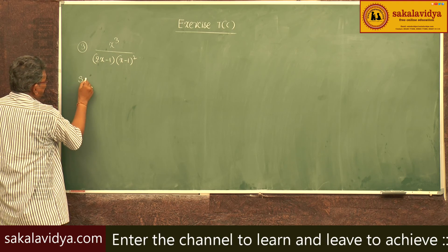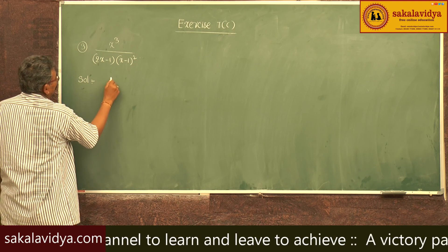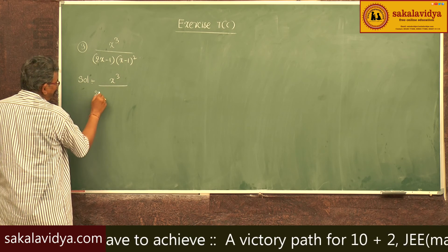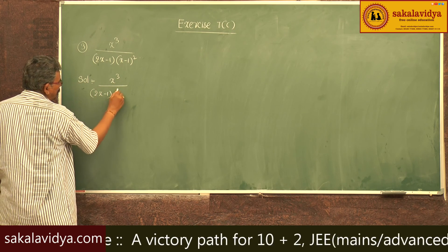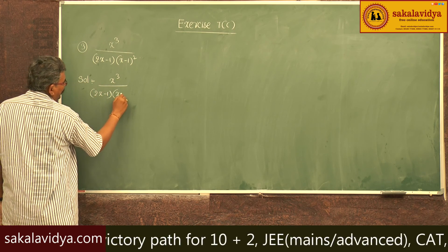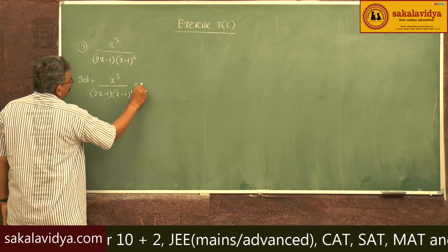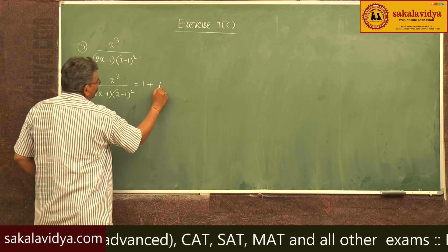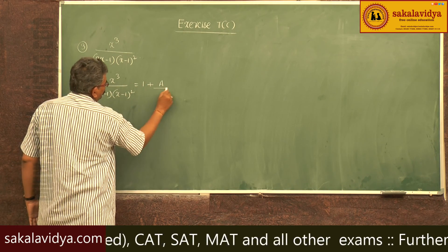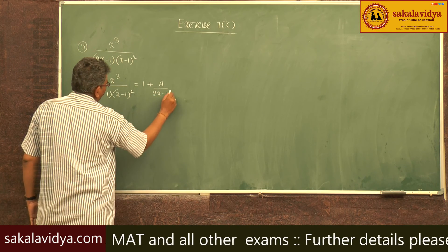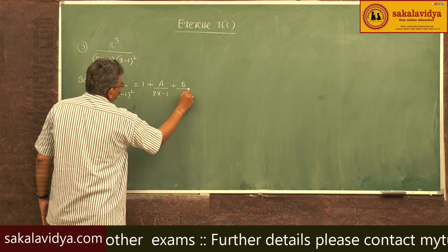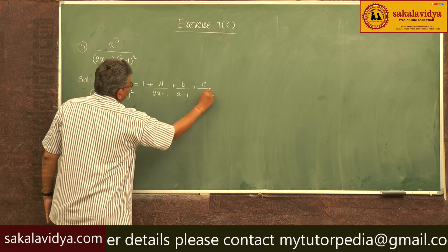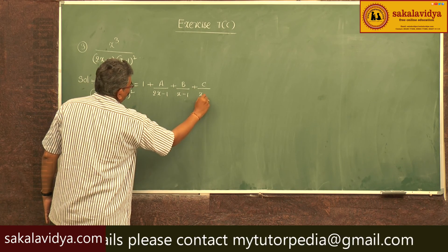So this we can write as: x cube by (2x minus 1)(x minus 1) whole square is equal to 1 plus A by (2x minus 1) plus B by (x minus 1) plus C by (x minus 1) whole square.